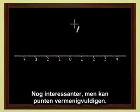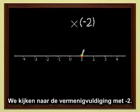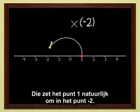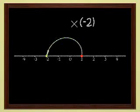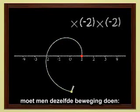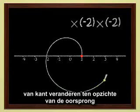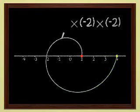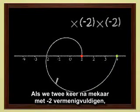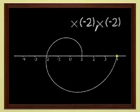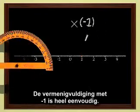More interesting still is multiplication of points. Let's look at multiplication by minus two, for instance. It transforms the point one into the point minus two, of course. And if you multiply again by minus two, you have to do the same thing. Change sides with respect to the origin, and double the distance from the origin. You get four, of course. If we multiply twice by minus two, we have multiplied by four. Multiplying by minus one is very easy.